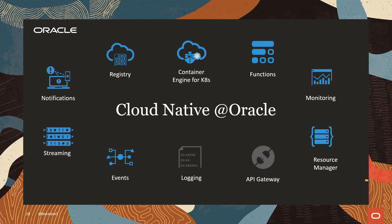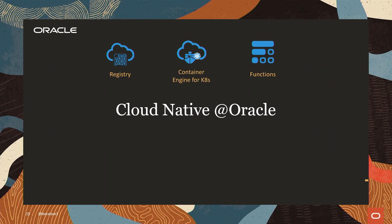Cloud native actually means a lot of different things to a lot of different companies. For us at Oracle it's basically a suite of services starting with the registry, the Oracle Kubernetes container engine for Kubernetes, functions, and a lot of supporting services surrounding it like notifications, monitoring, etc. The foundational pieces of all of this are three specific things: the registry, the container engine for Kubernetes, and the functions platform, which is Oracle Cloud's serverless offering.